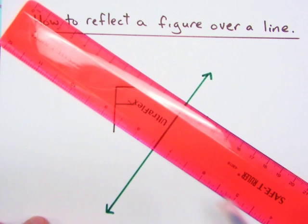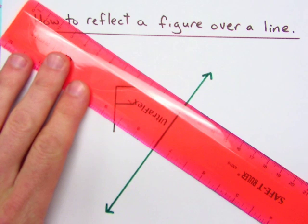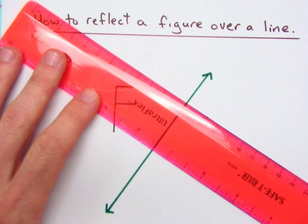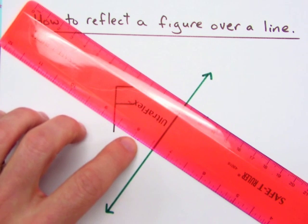Now, you can see on the ruler, at every measurement, you have a mark here, and that mark is actually perpendicular to the edge of the ruler.